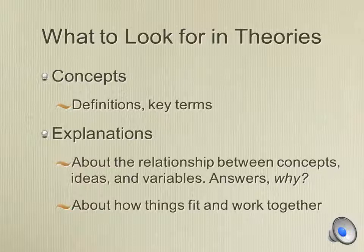Let me give an illustration. There's a theory called uncertainty reduction theory. The idea is that when we have high uncertainty, we want to reduce it by seeking information and communicating more. So these two variables are related: the higher our uncertainty, the higher our need for information — you'll see more information-seeking with high uncertainty. Conversely, the less uncertainty you have, the less need you'll have to seek information. There's a bit of controversy about that theory, which we'll discuss more this semester. But that's an example of how two concepts relate — concepts, and more importantly, explanations.